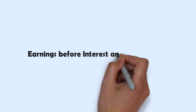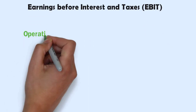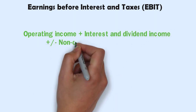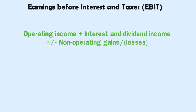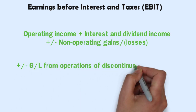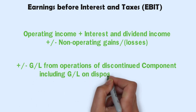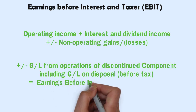Earnings Before Interest and Taxes (EBIT): It is sometimes known as EBIT. Operating income plus interest and dividend income — if it is a non-operating gain, we will add it; and if it is a non-operating loss, we will subtract it — then plus or minus gain or loss from operations of discontinued operations, including the gain or loss on disposal before tax, equals the earnings before interest and taxes.